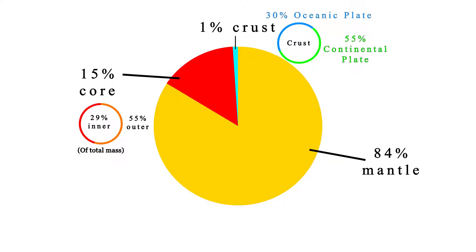The crust consists of 55% continental plate, which is land, and 30% oceanic plate, which is the sea bottom.